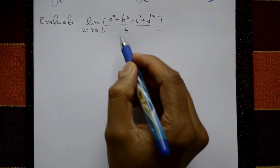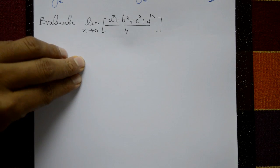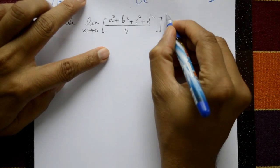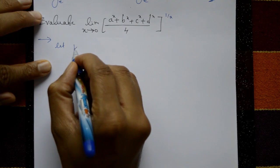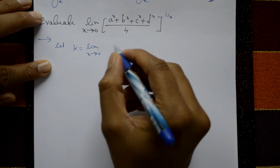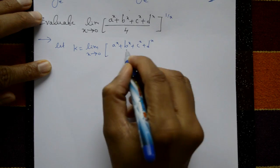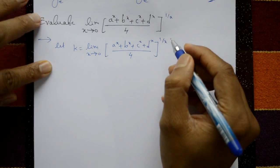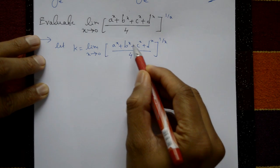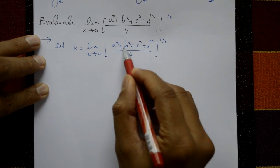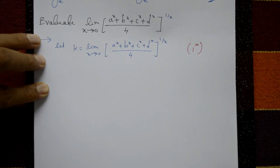Evaluate the limit as x tends to 0 of (a raised to x plus b raised to x plus c raised to x plus d raised to x) divided by 4, whole raised to 1 by x. Let k equal this limit. Applying x equals 0: each term raised to 0 is 1, so 4 by 4 equals 1, and the exponent 1 by x is infinity. This is the 1 raised to infinity form, so take log on both sides.